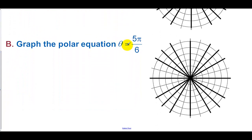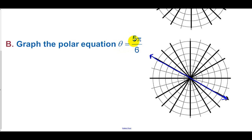Graph the polar equation θ = 5π/6. Go to 5π/6 on the grid. If r is positive, the points will be along the positive 5π/6 ray going that direction. But we can also have negative values of r, which go in the opposite direction. So it is a full line cutting through the origin, going in both the positive and negative directions. That is the graph of θ = 5π/6.